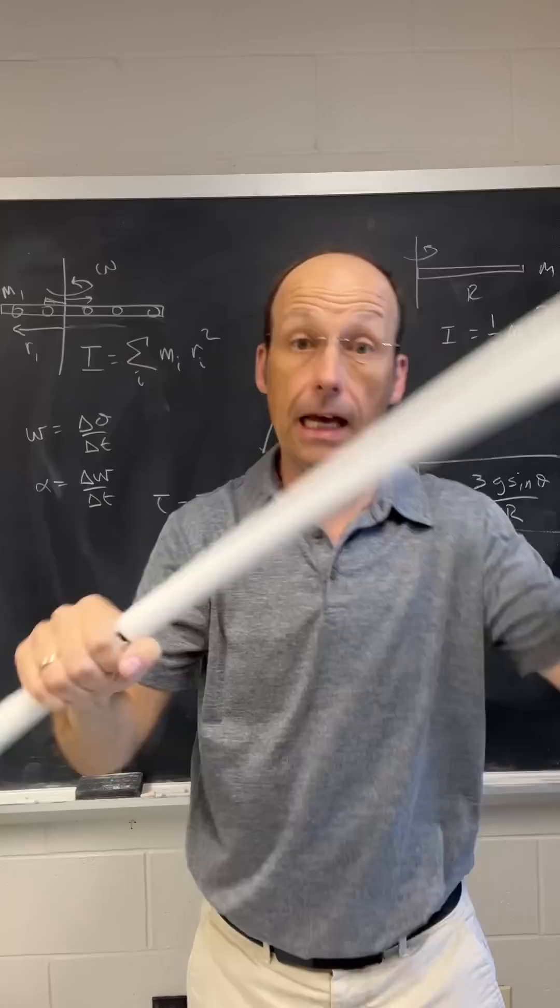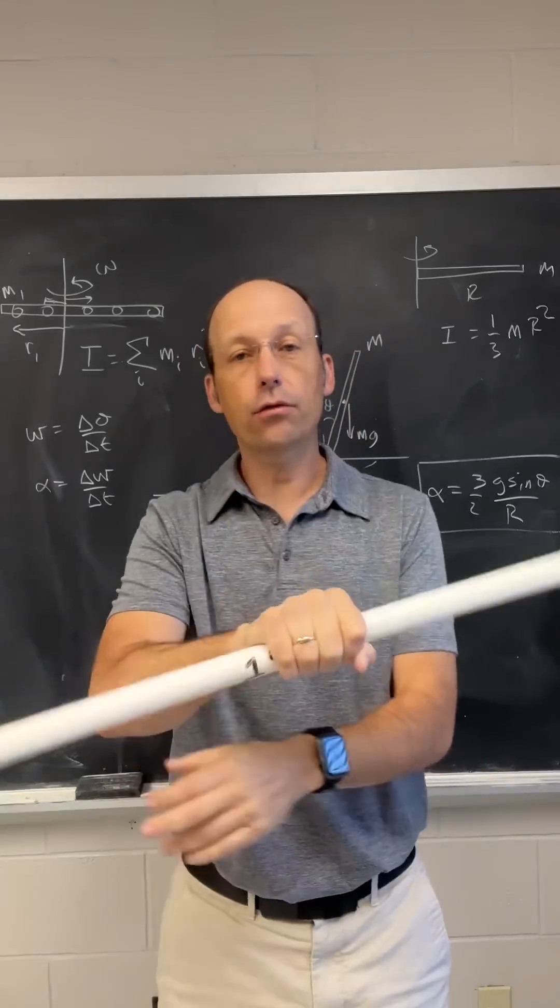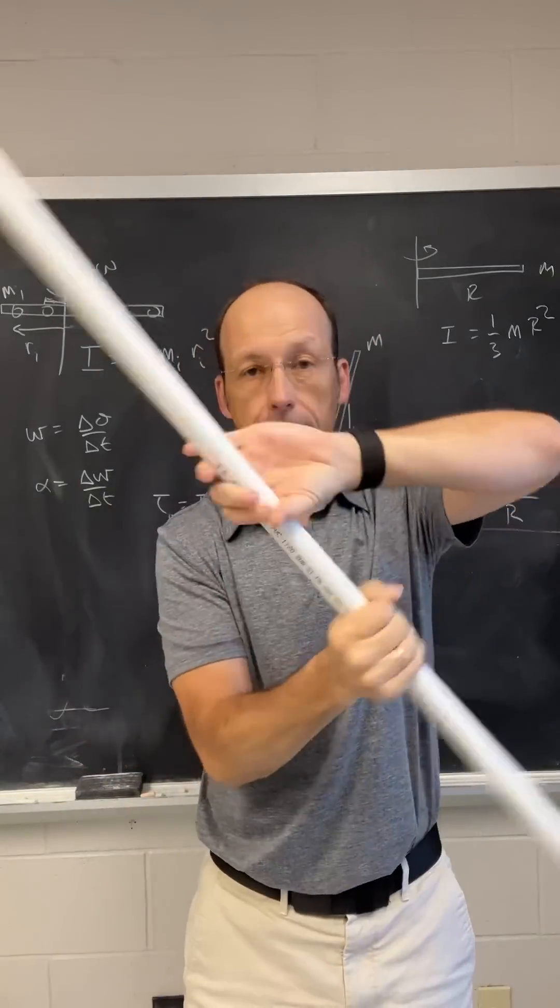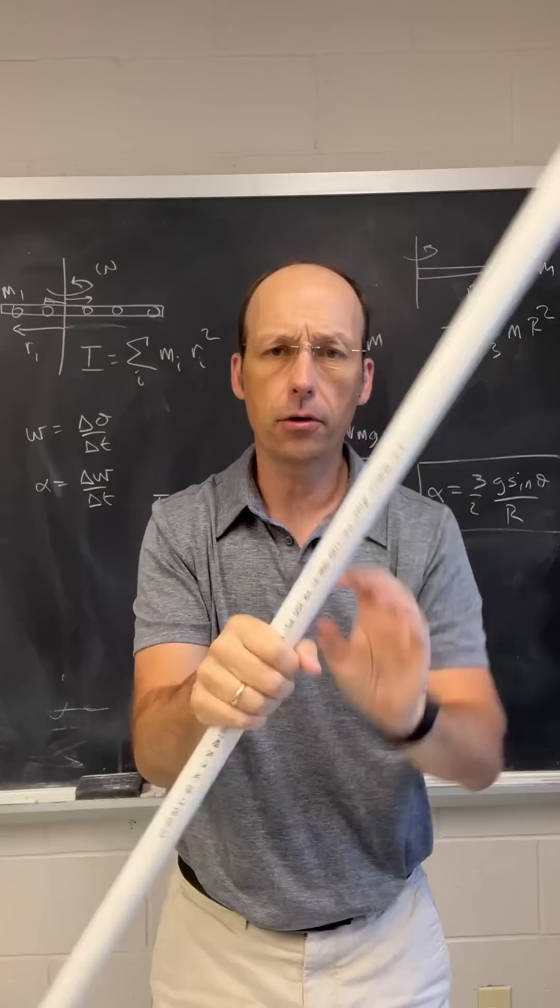I'm going to show you some more physics tricks that look hard but are actually easy. This one deals with a property called the moment of inertia, which is how hard it is to rotate something, to change its rotational motion.